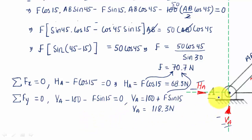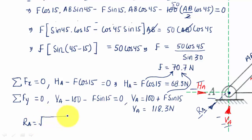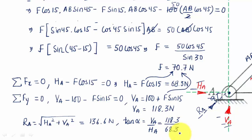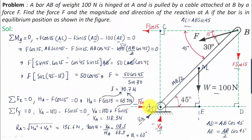The overall resultant at A is RA = √(HA² + VA²). Substituting the values gives RA = 136.6 Newtons. The angle alpha that the resultant makes with the horizontal is found from tan α = VA / HA = 118.3 / 68.3, which gives alpha approximately equal to 60 degrees.